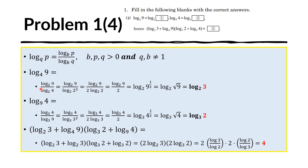For log of 4 base 9, we follow the same procedure using base 3: log of 4 base 3 over log of 9 base 3. Since 9 is 3 squared, log of 9 base 3 equals 2 times log of 3 base 3, which is 2 times 1, equaling 2. So we get log of 4 base 3 over 2. The factor of one-half moves into the exponent: 4 to the one-half is the square root of 4, which is 2. Therefore log of 4 base 9 equals log of 2 base 3, and the number that goes here is 2.